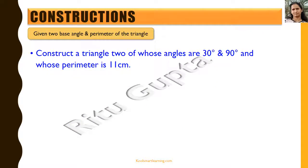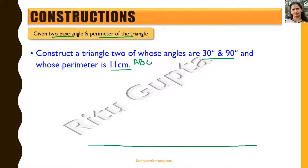Finally, we construct a triangle when two base angles and the perimeter are given. We want to construct triangle ABC with angles 30 degrees and 90 degrees and perimeter 11 cm. We draw line segment XY equal to 11 cm, representing the perimeter. At X we construct the angle 30 degrees.